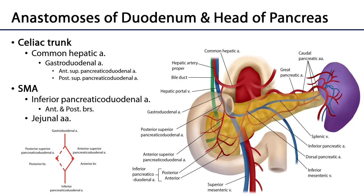When we think of the blood supply to the duodenum, this is also going to be the blood supply to the head and neck of the pancreas, and there will be two major sources for this: the celiac trunk, specifically the gastroduodenal branch of the common hepatic artery, as well as the superior mesenteric artery. Let's walk through these connections, but before we do, I'd like to look at this schematically.